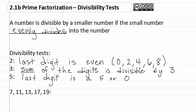For the prime numbers seven, eleven, thirteen, seventeen, and nineteen, long division is usually the best option. This means you use long division to see if seven, eleven, thirteen, seventeen, or nineteen divides into the number.